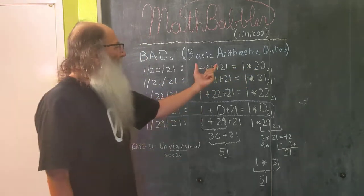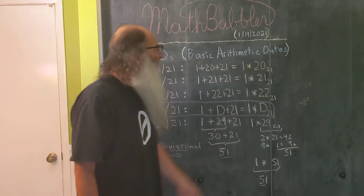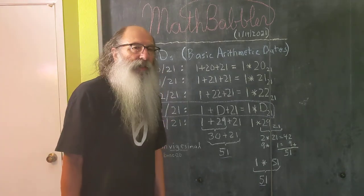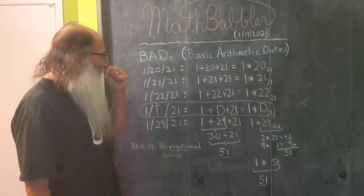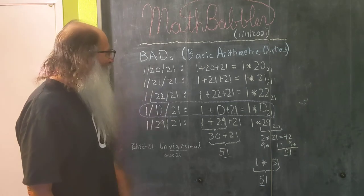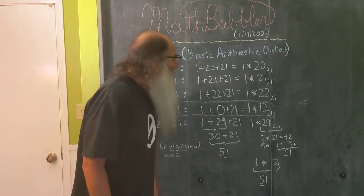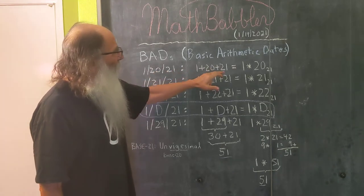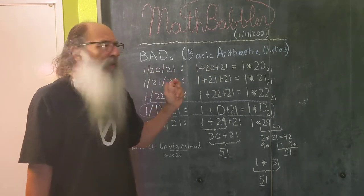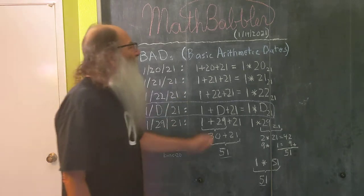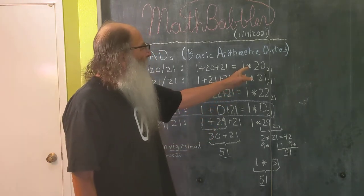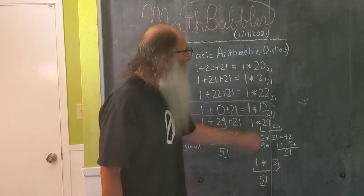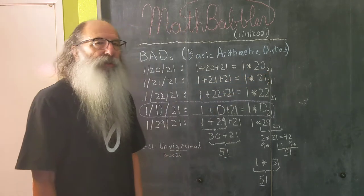We have expressions on both sides. Each number in the date is used once only in the expression, and all three of the numbers are used only once. And so 1 plus 20 plus 21, well that's 42. But 1 times 20 to the base 21, that also equals 42.